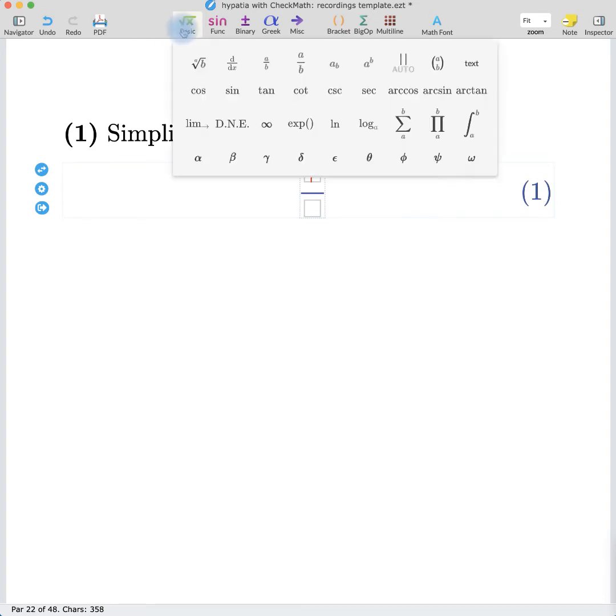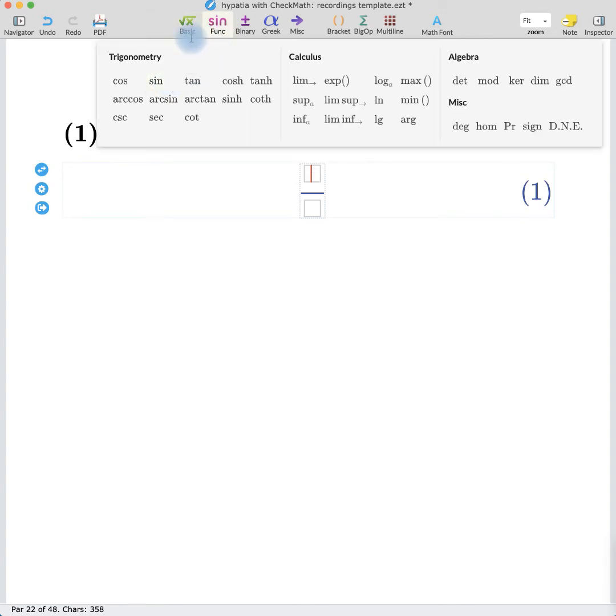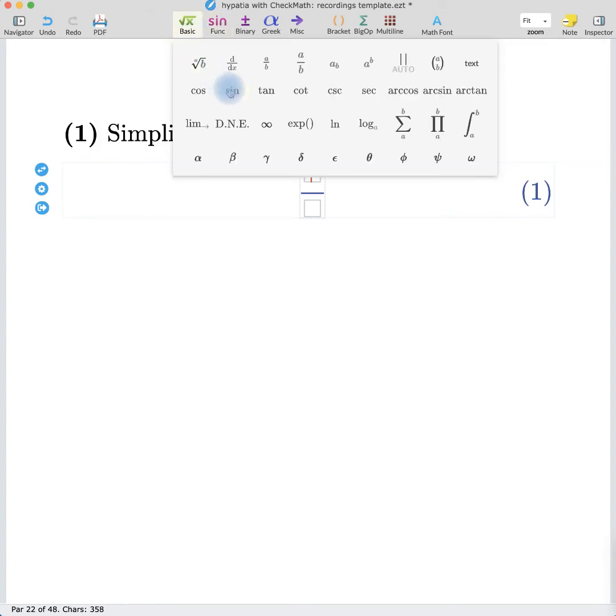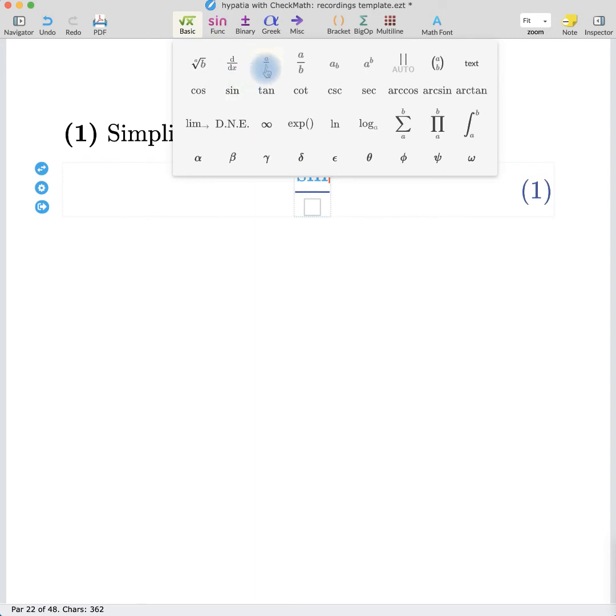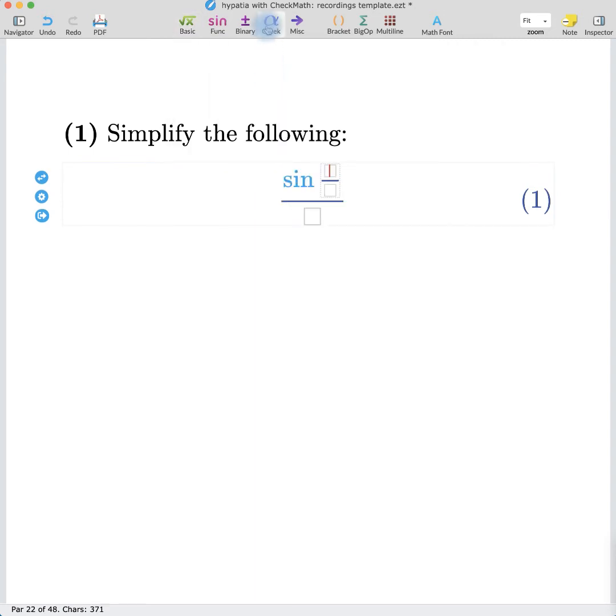Then on the numerator, I want a sine function. This can be found under the basic menu and also under the functions menu, but let's just stick with the basic menu. Both will give us the same sine function. For the argument of the sine, I'm going to choose another fraction. And I want this to be pi over 4. From the Greek alphabet, we can find pi. And by either clicking or using the arrow keys, we can go down to the denominator and choose 4.